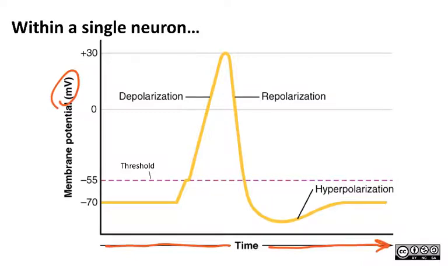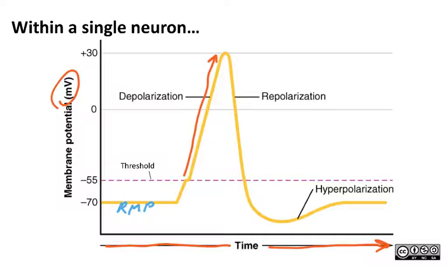We've got the resting membrane potential at negative 70 millivolts. Then you might have small depolarizations that sum up to the threshold value, or perhaps they never do, in which case you don't get an action potential. But once you hit that threshold, the voltage-gated channels open and there's this huge wave of depolarization. When you get to roughly 30 millivolts positive inside with respect to the outside, that stimulates the opening of voltage-gated potassium channels, and you have repolarization.